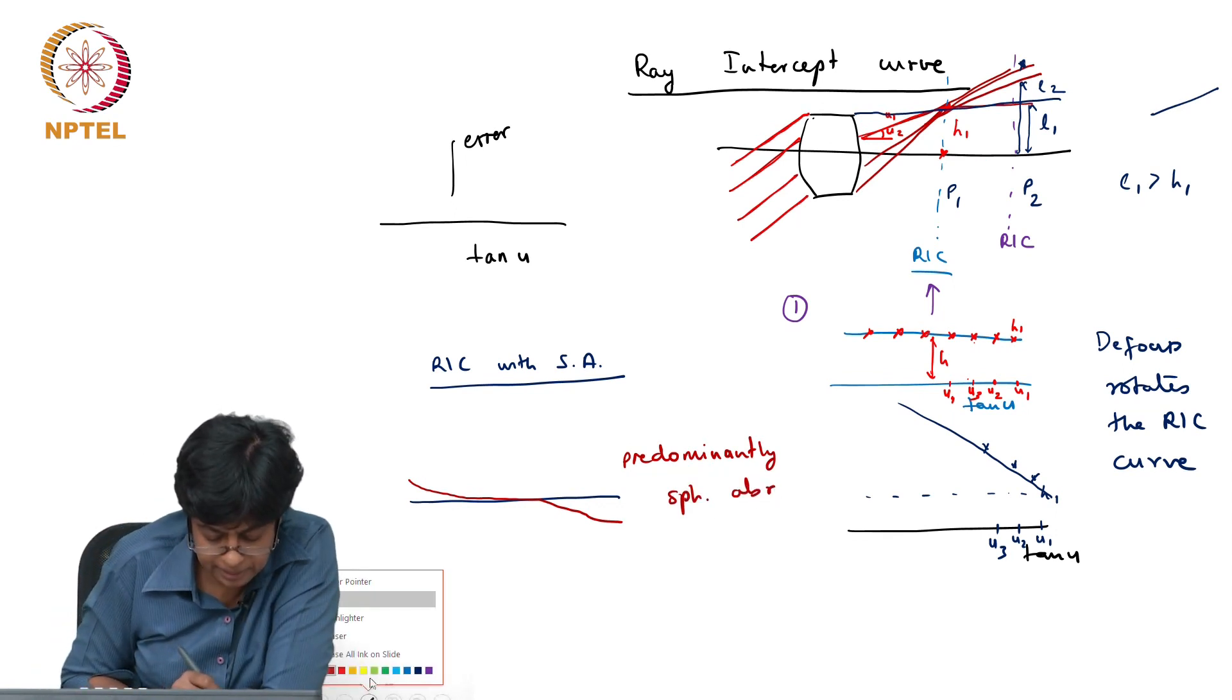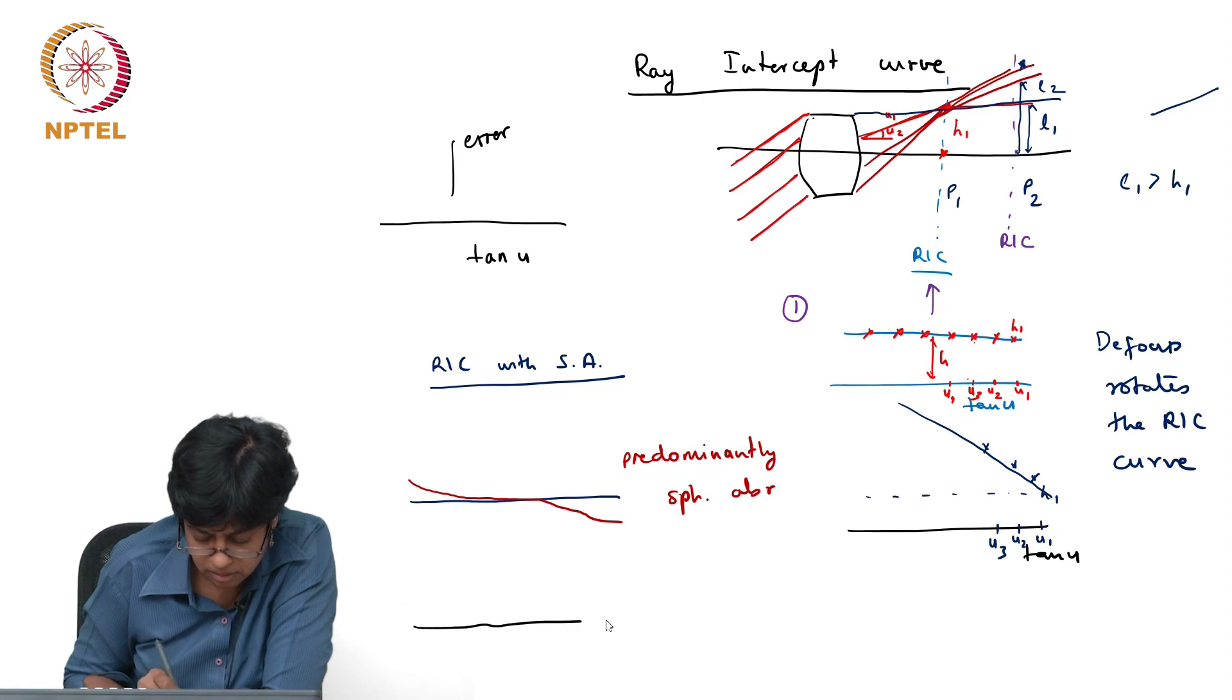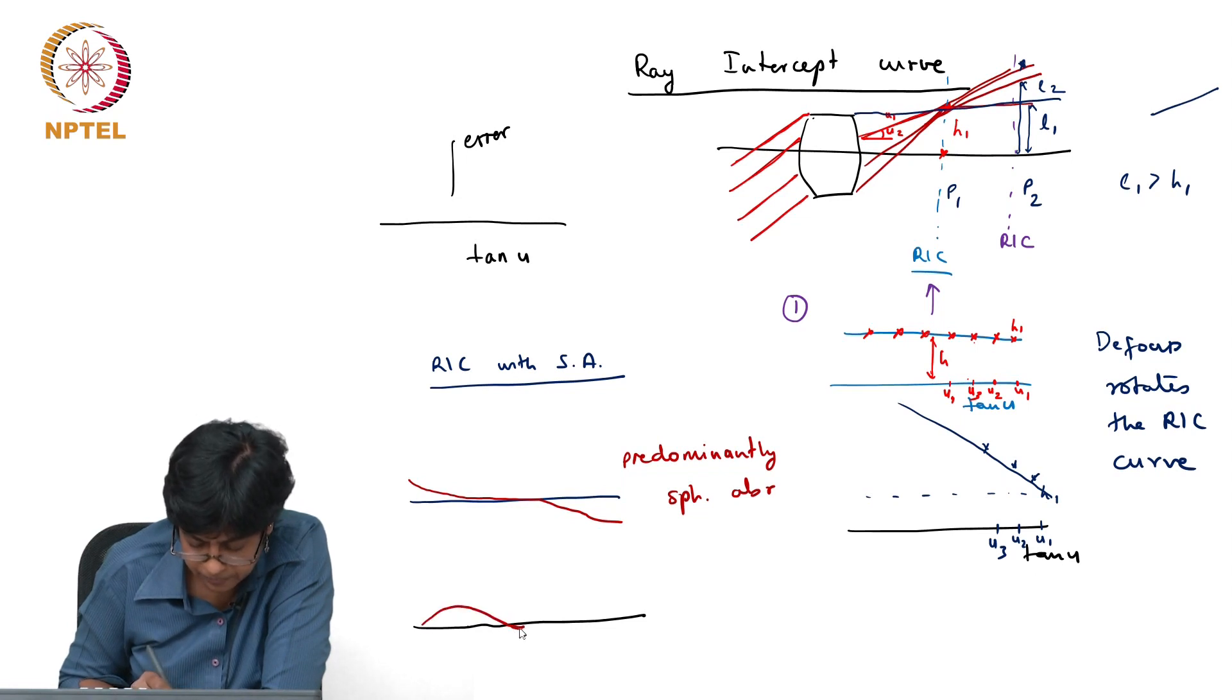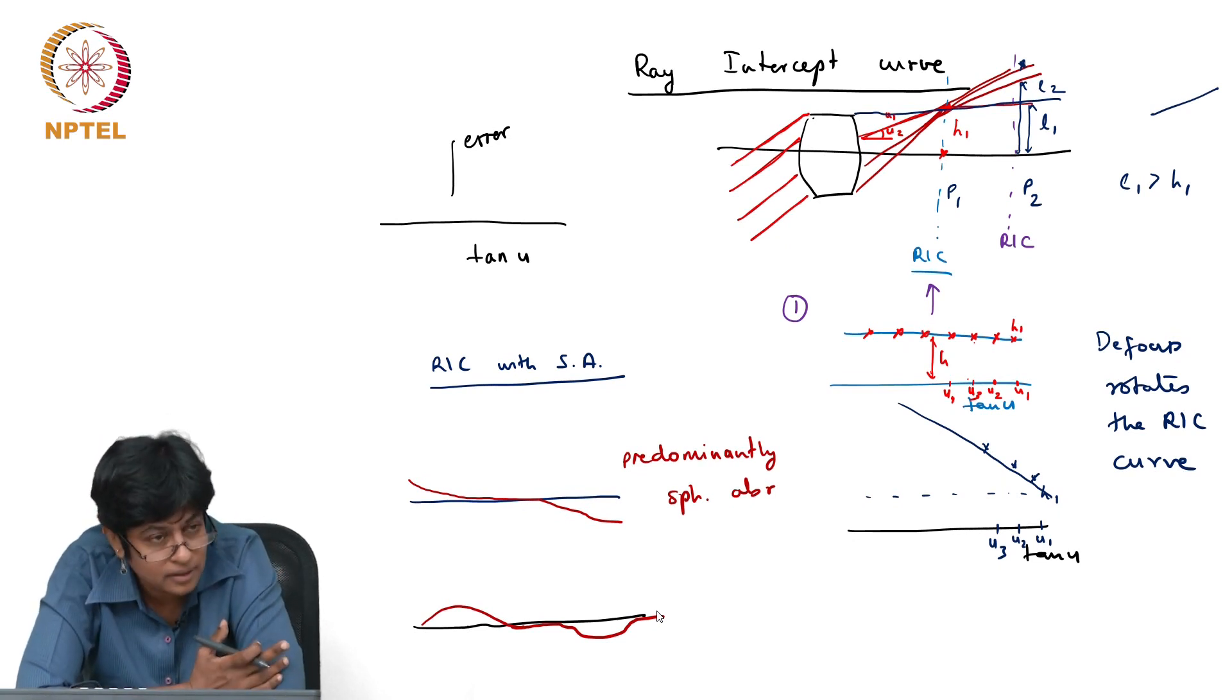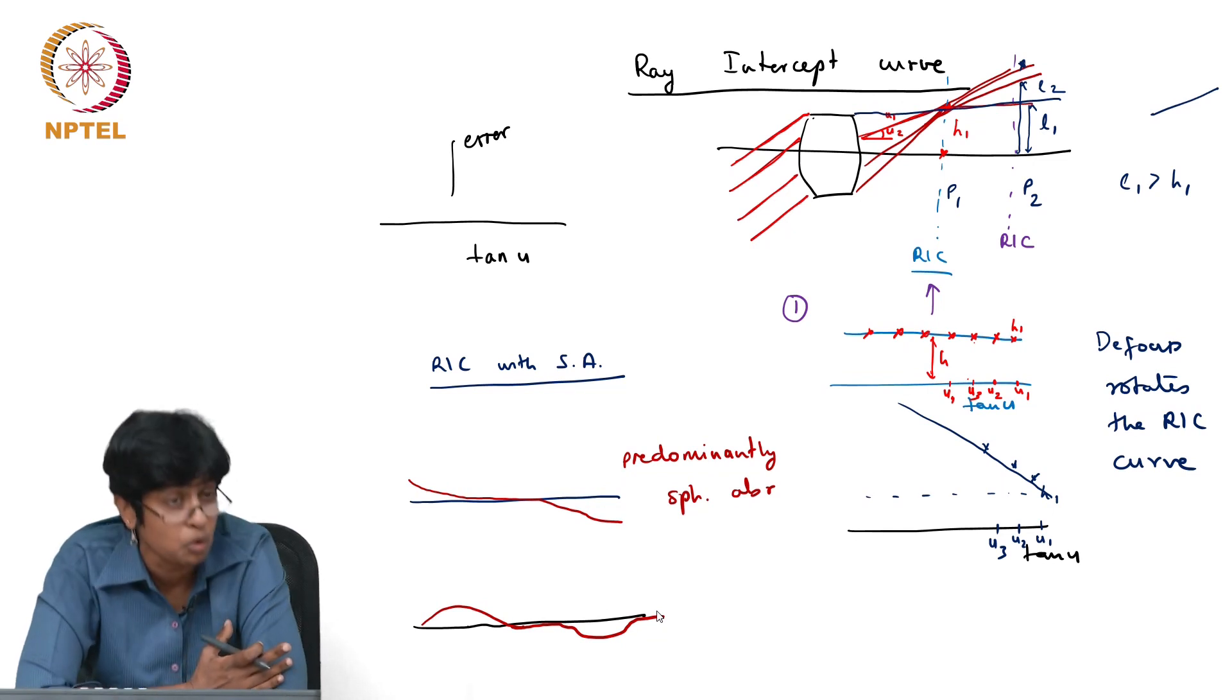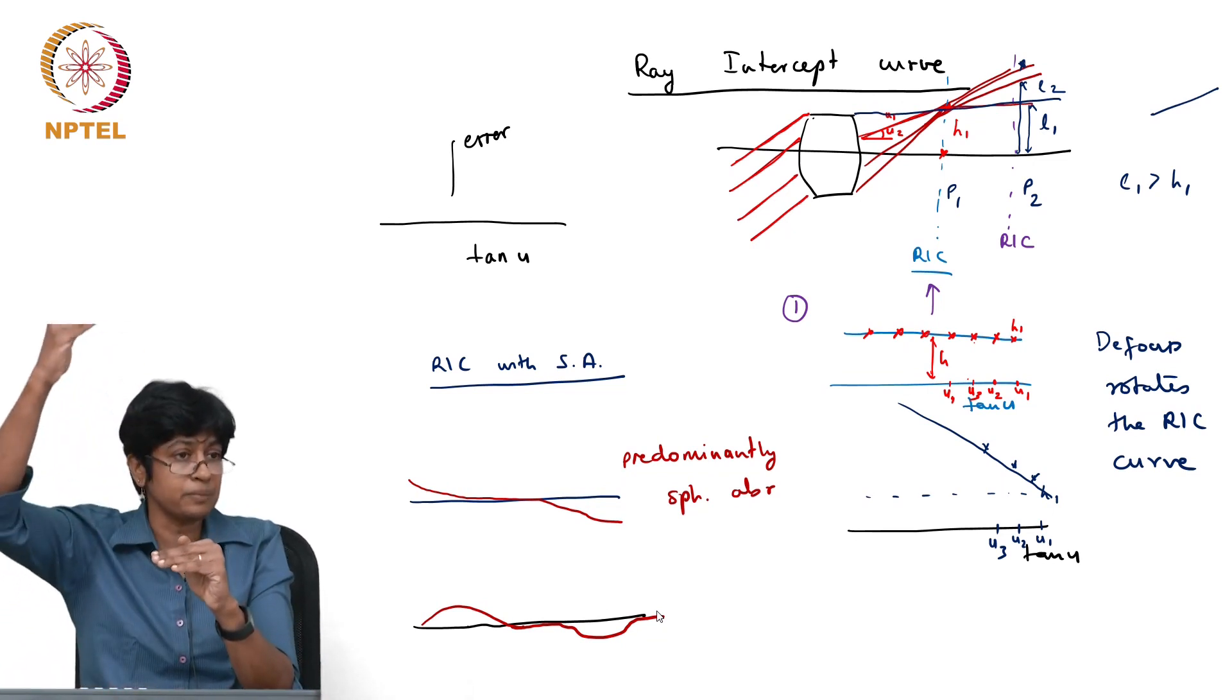Now if I gave you, I said I'm going to change something in this system, and the changed one looks like this. What do you think has happened to this system? What would you say is the aberration of this system? It has anti-symmetry. What is the predominant aberration? It is still spherical aberration, but it doesn't look like a typical spherical aberration.